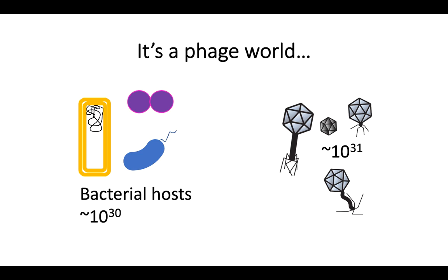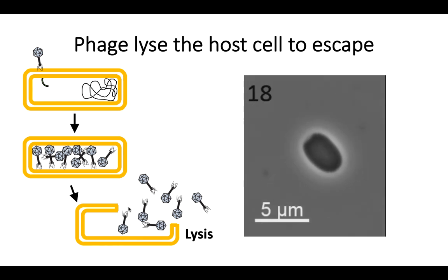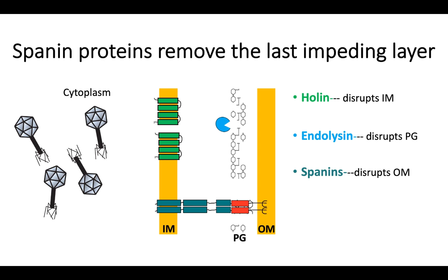Phage, or the viruses of bacteria, are incredibly abundant on this earth and are estimated to outnumber their hosts by about 10 to 1. When they infect an individual cell and begin to replicate, they must finally at the end escape by bursting or lysing the host cell in what is a dramatic cellular event. This mechanism is carefully orchestrated at the molecular level and allows the phage to specifically disrupt each of the barriers posed by a cell to escape from the inside to the outside. Phages encode specific proteins for each of those barriers. These are the three main classes: the holins, endolysins, and spanins used by tailed phages.